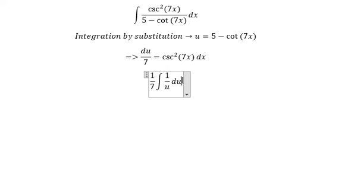And now we can get the final answer that is about 1 over 7 multiplied with ln of absolute value of u. Ln is natural log.